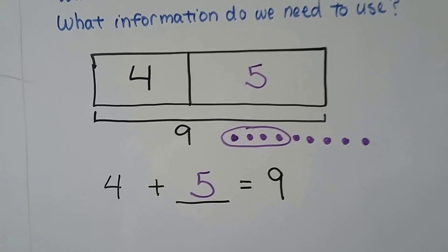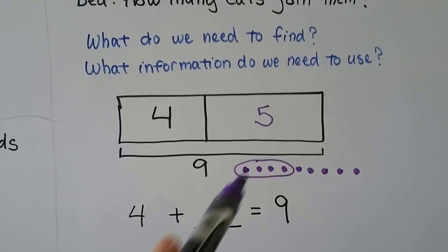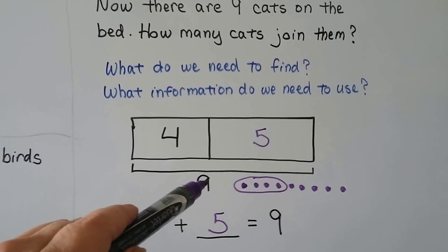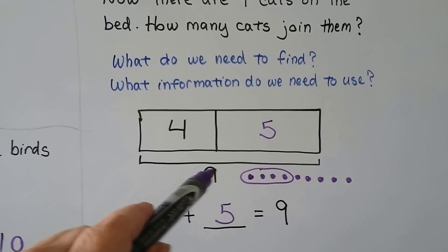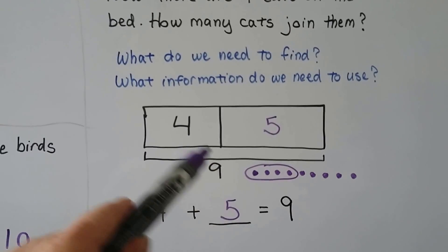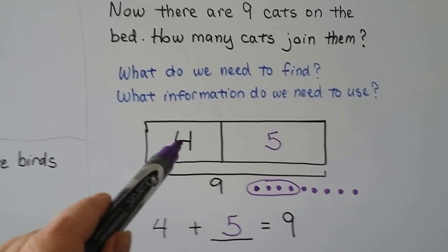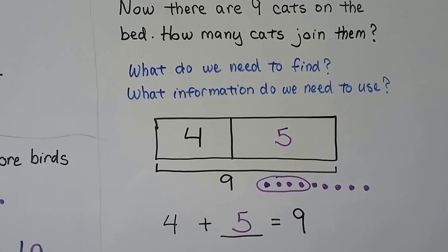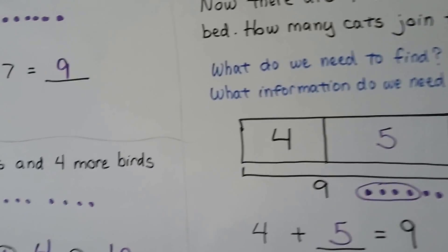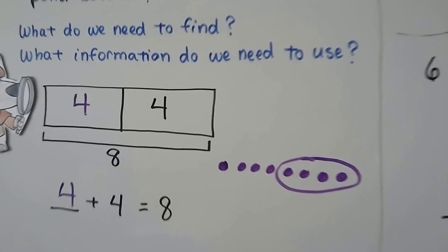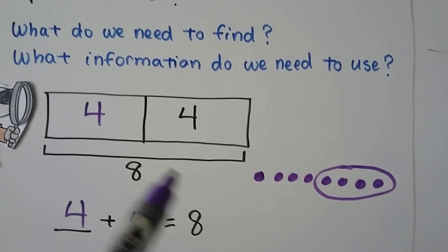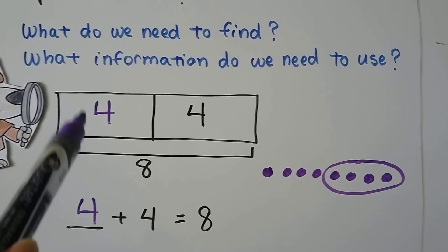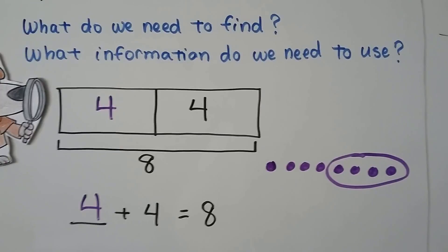When a missing number is missing in the bar model, you can use counters and dots to help you figure it out. Make as many dots as the total amount. We had nine so we made nine dots. We knew there were four in this box of the bar model, so we circled four and whatever was left over was what went into the missing box. Just like the frogs problem — we knew there were eight, so we made eight dots, circled four, and whatever was left over went into the missing box of the bar model.